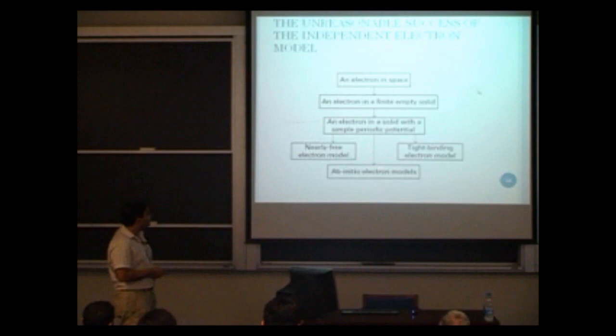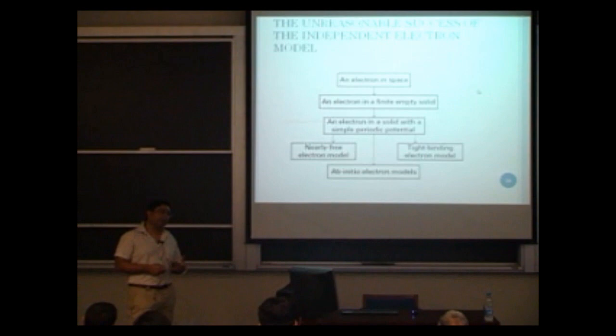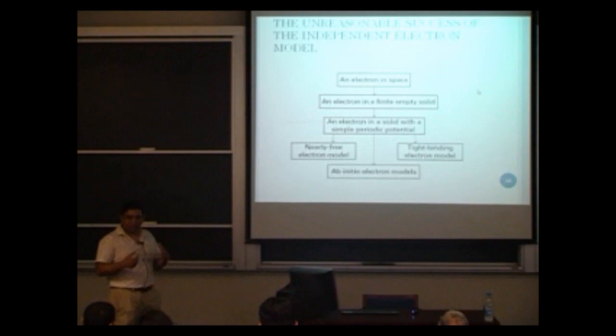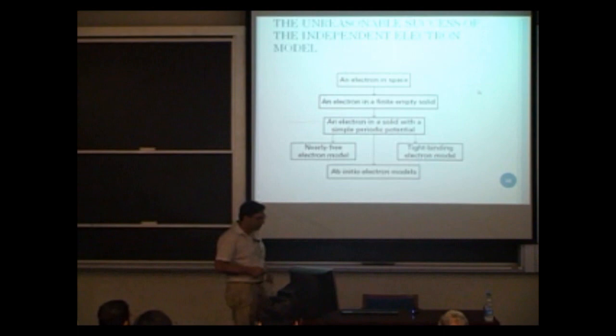Other ways to go about it are more ab initio electron modeling approaches, where you use basis functions and density functional theory to do a numerical calculation of the bands. This is sort of an industry where people work out the band structure and determine the properties of materials.